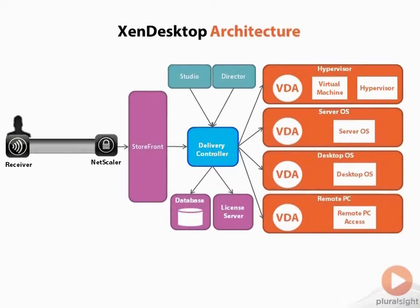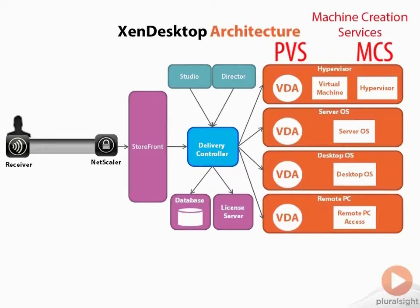Once we have those three components, you can deliver those VMs in two different ways: via PVS, or via MCS — Machine Creation Services. With provisioning services, you are streaming the operating system to the VM; the VM can be diskless and does not need a local virtual hard disk. With Machine Creation Services, you have to have a local virtual disk for the VM because it will be storing certain data on that actual disk.